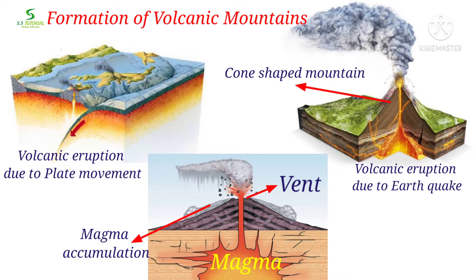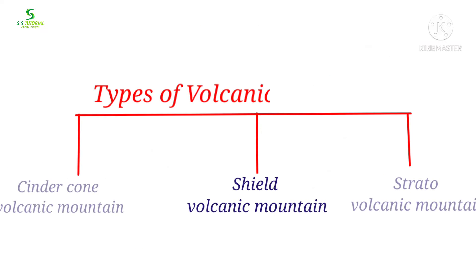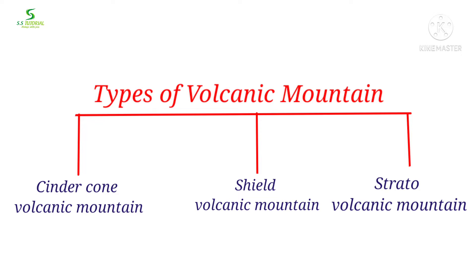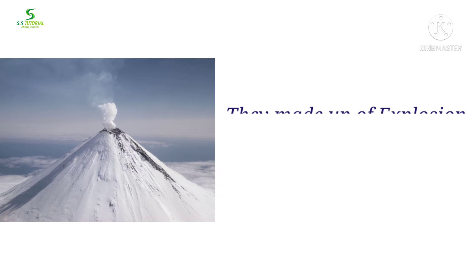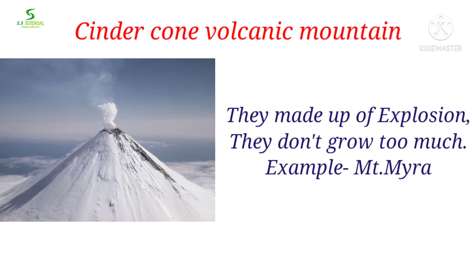Let's know about the formation of volcanic mountains. When magma erupts from any weak spot or cracks of the earth's crust due to plate movement, release of pressure from the interior of the earth, earthquakes, and so on, magma accumulates surrounding the vent, and over time a sharp conical mountain builds up, which is known as a volcanic mountain.